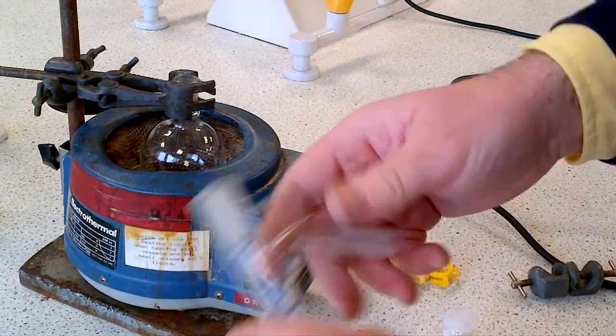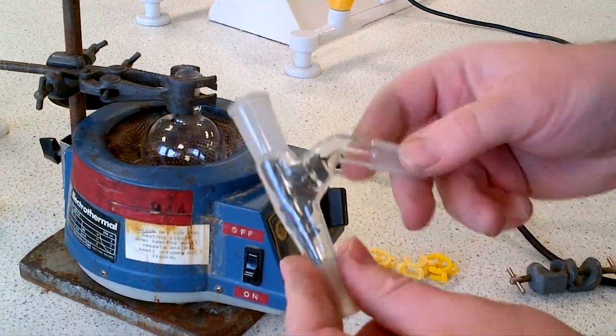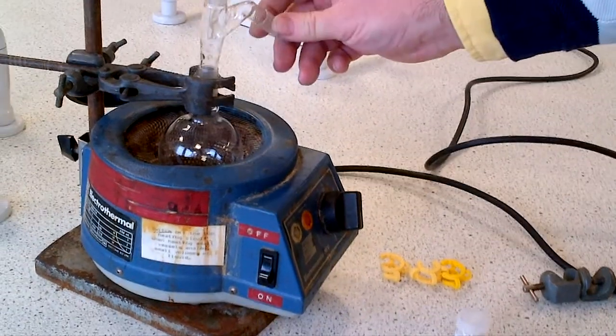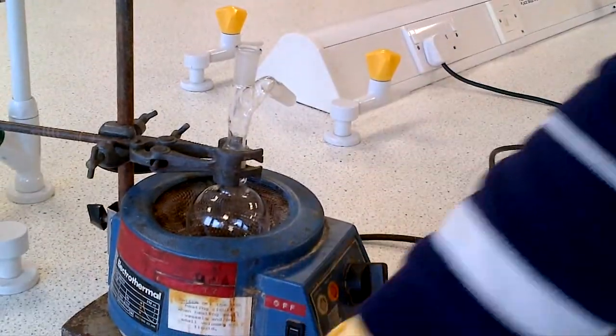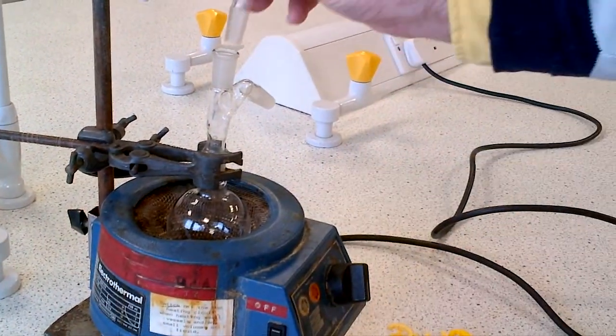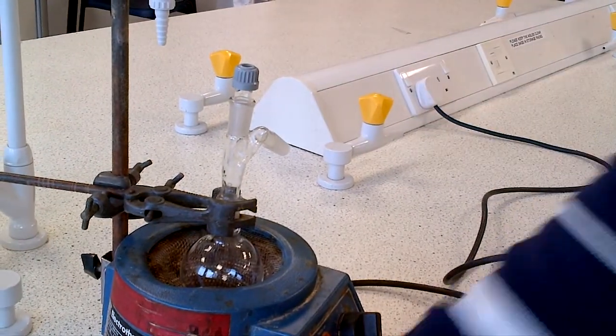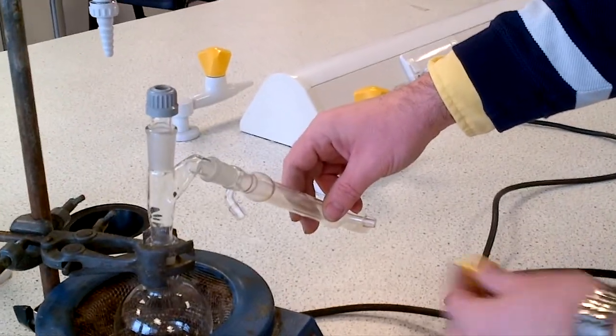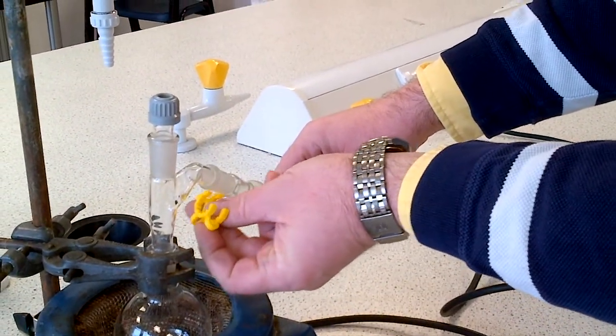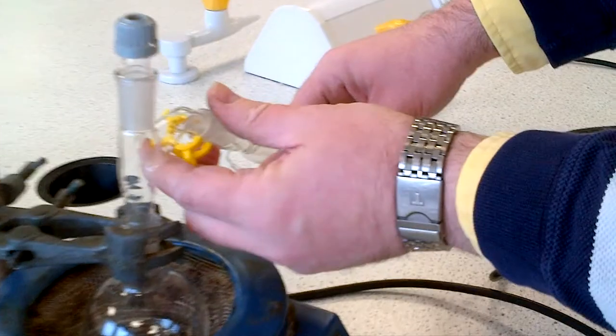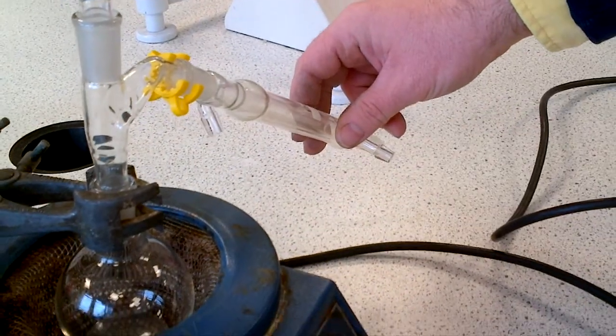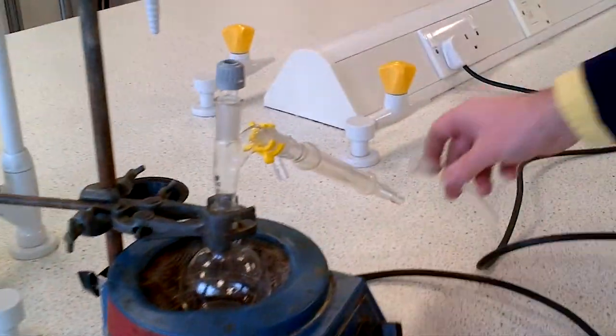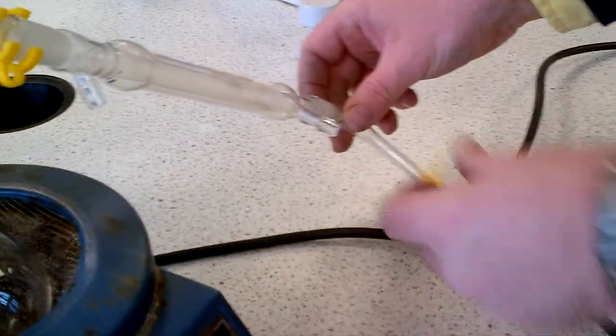Make sure everything is clean and there are no cracks on the joints, then thread in the still head. Put that in position. Now you clip on the condenser with one of these keck clips.